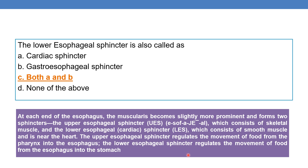The upper esophageal sphincter regulates the movement of food from the pharynx into the esophagus, whereas the lower esophageal sphincter regulates the movement of food from the esophagus into the stomach — hence the term gastroesophageal sphincter. So the lower esophageal sphincter is also called both the cardiac sphincter and the gastroesophageal sphincter. The correct answer is option C, both A and B.